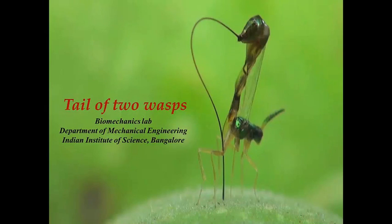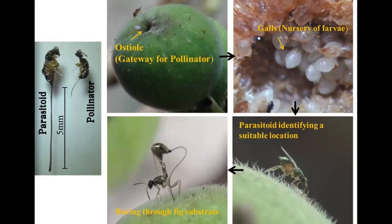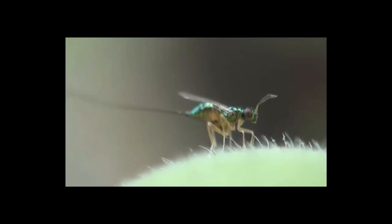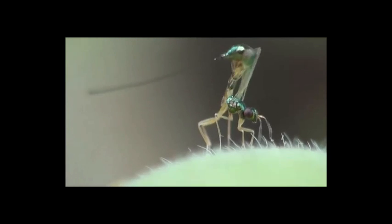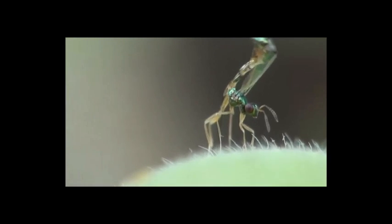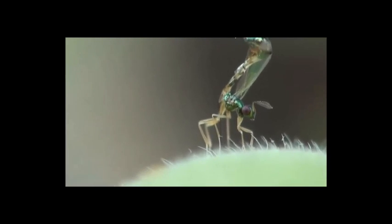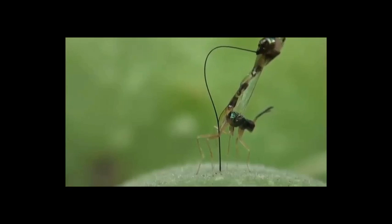In our study, we looked at functional adaptations and mechanical properties of fig wasp ovipositors. A pollinator enters through the ostiole and lays its eggs while pollinating, whereas a parasitoid accesses the inside using its long, thin and flexible ovipositor.